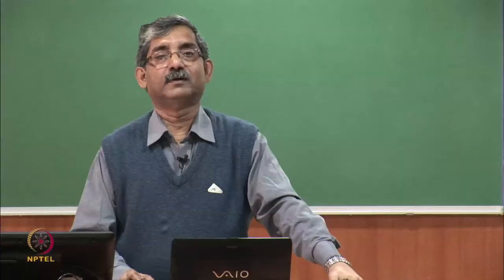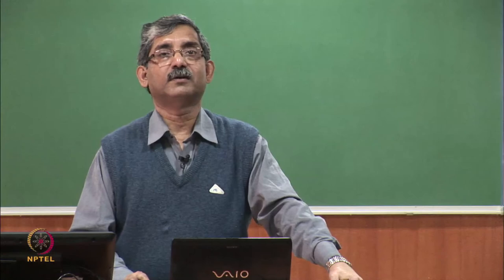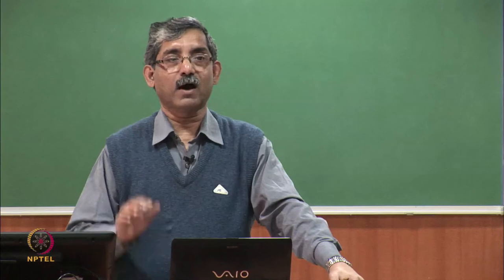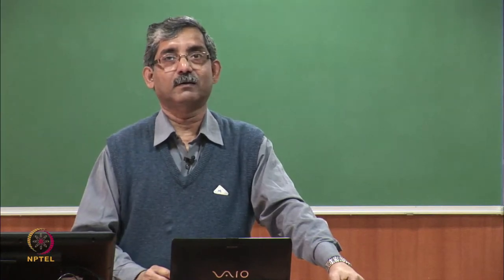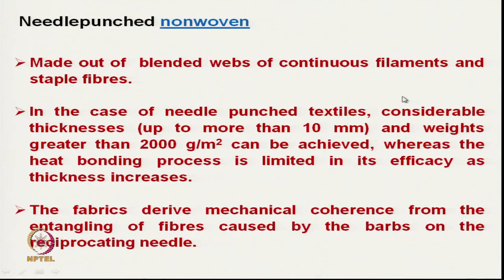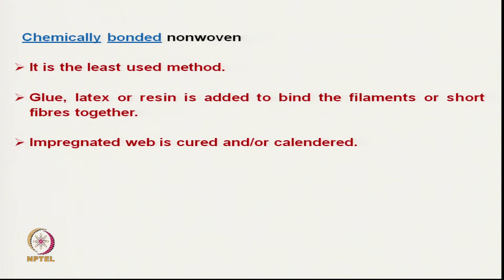Another way of making nonwoven fabric is the needle punched fabric, where using barbed needles the fibers are bonded mechanically. We can use staple fiber or continuous filaments for needle punching. In needle punch textiles, considerable thickness can be achieved — up to 10 millimeters depending on requirements, and weights can be up to 2 kg per square meter. The fabric is derived from mechanical cohesion by entangling fibers using barbed needles. Chemical bonded nonwovens, where fibers are bonded using glue resin, are hardly used in geotextile.